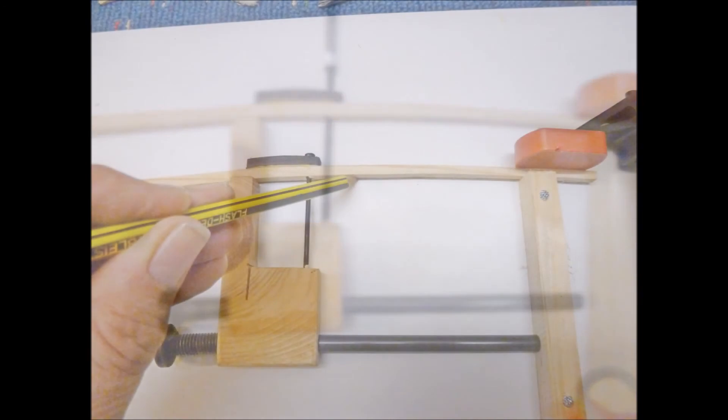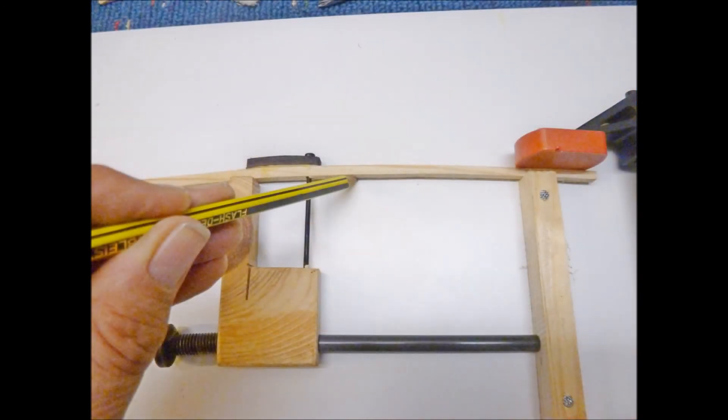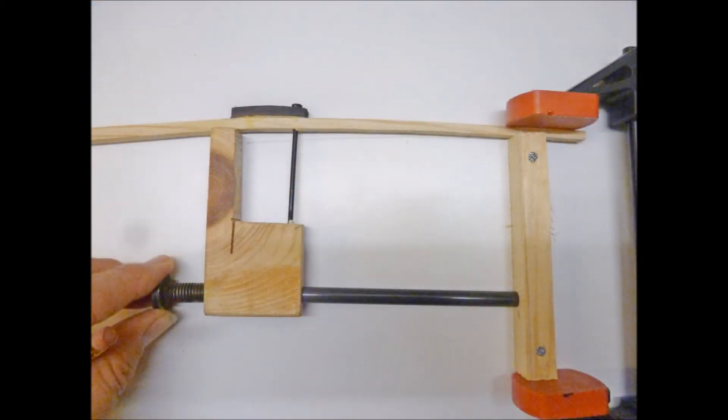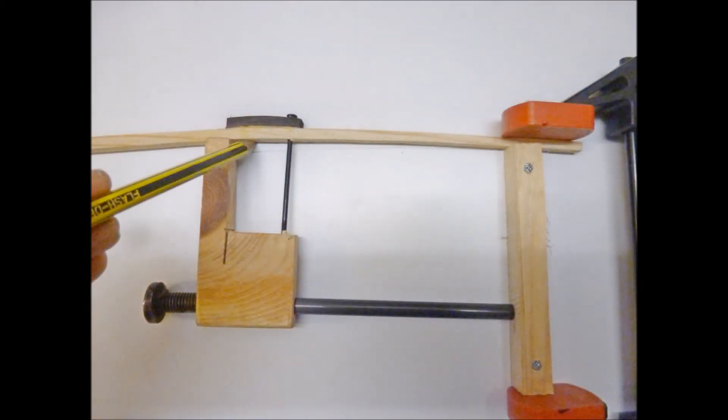When all parts had been set together, the starting position of the belly bending is marked. Tightening the adjustment screw carefully, we can now see how the ledge is straightening piece by piece. The obtained position is marked again with a pencil.